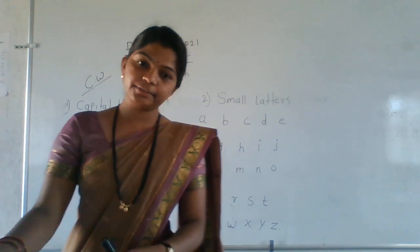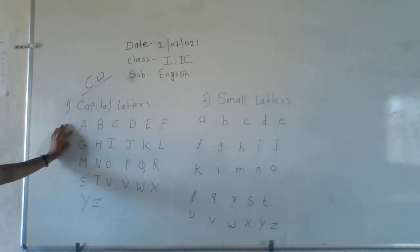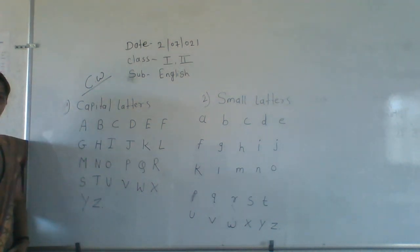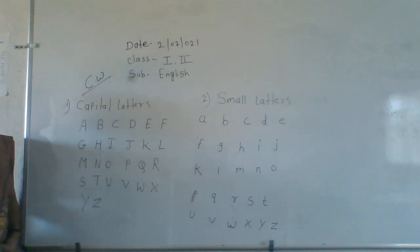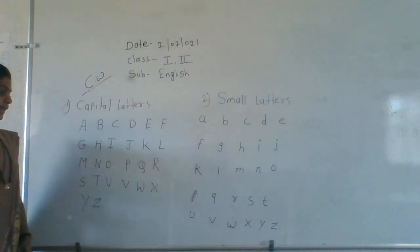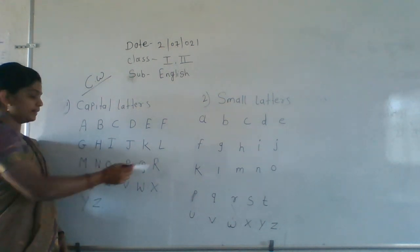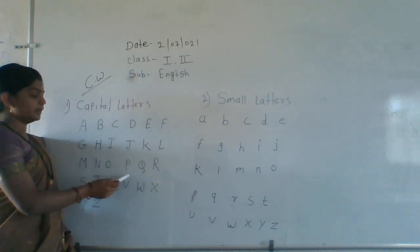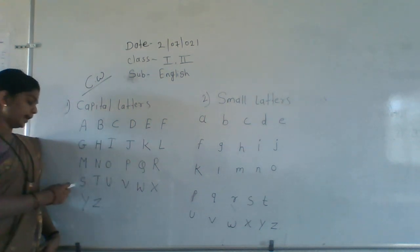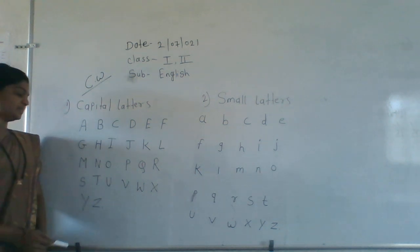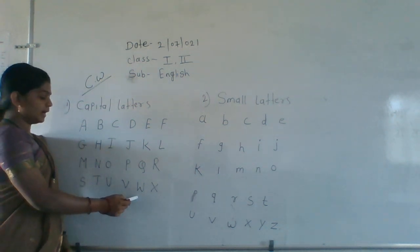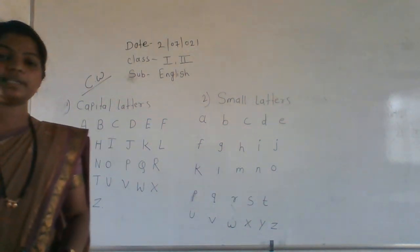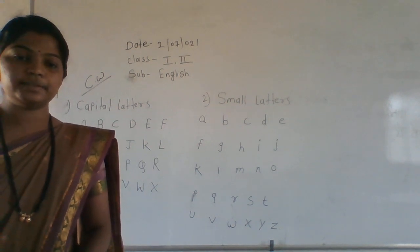Then again read with me the alphabets. A, B, C, D, E, F, G, H, I, J, K, L, M, N, O, P, Q, R, S, T, U, V, W, X, Y, Z. Write down children, write in your C.W. book.